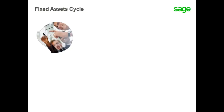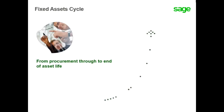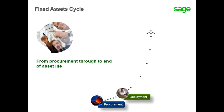The Fixed Assets Application Cycle allows you to manage assets from procurement through to the end of the asset cycle. You can record asset purchases in the same task as normal purchases. You can define the status of an asset as to when it goes into service or not.